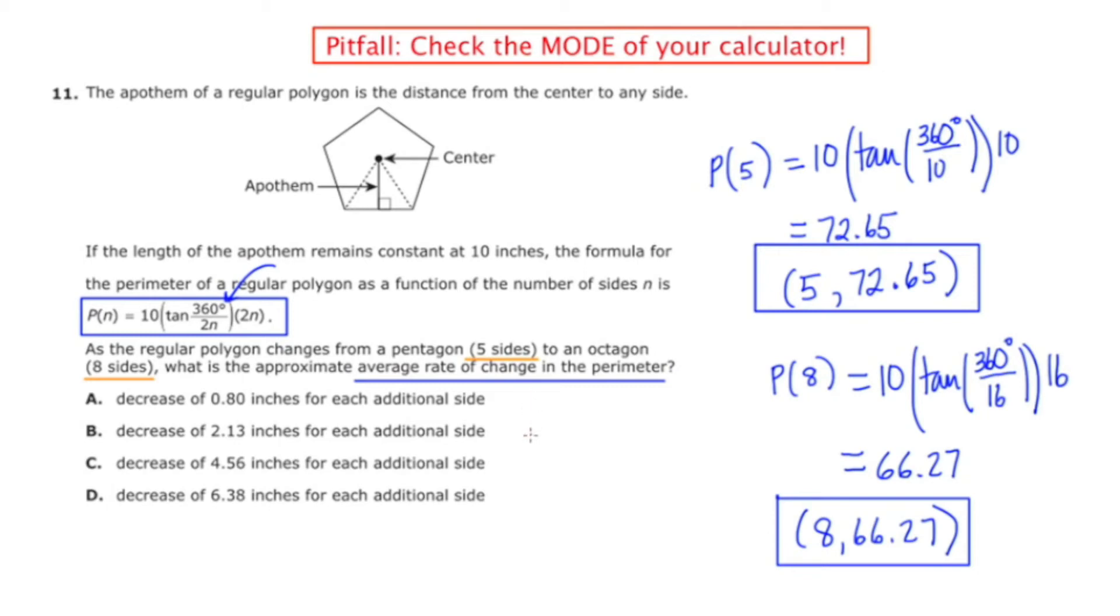Now the actual question we're supposed to answer is right here: what is the average rate of change in the perimeter? So we have the perimeter at these two specified values of n, the number of sides. The perimeter at 5 sides is 72.65, and the perimeter at 8 sides is 66.27.